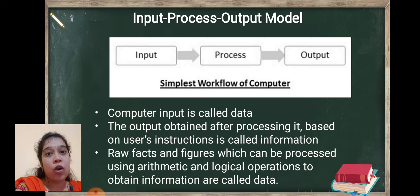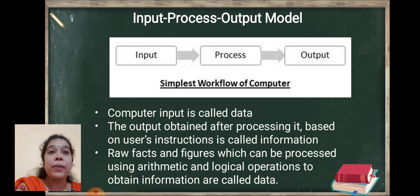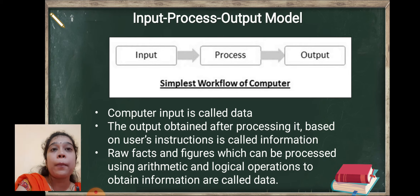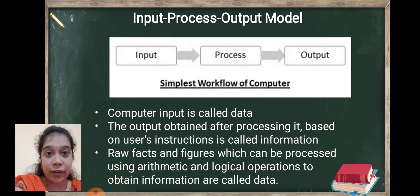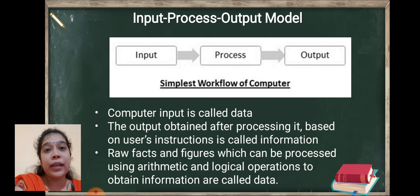Whatever raw data we provide to the computer is processed using arithmetic and logical operations to obtain information. Means for converting data into information, computer processes that raw data by using arithmetic and logical operations.